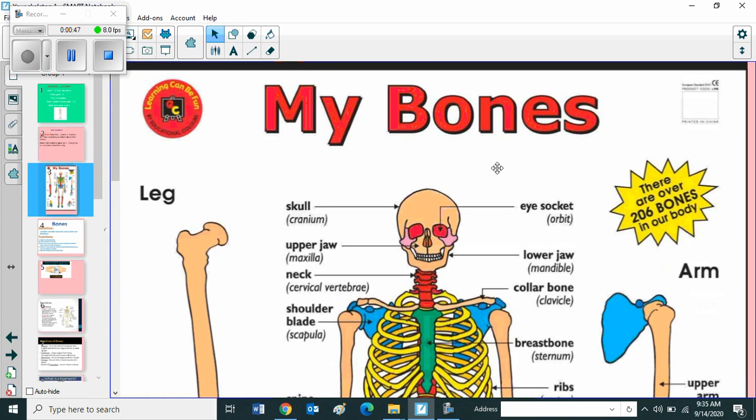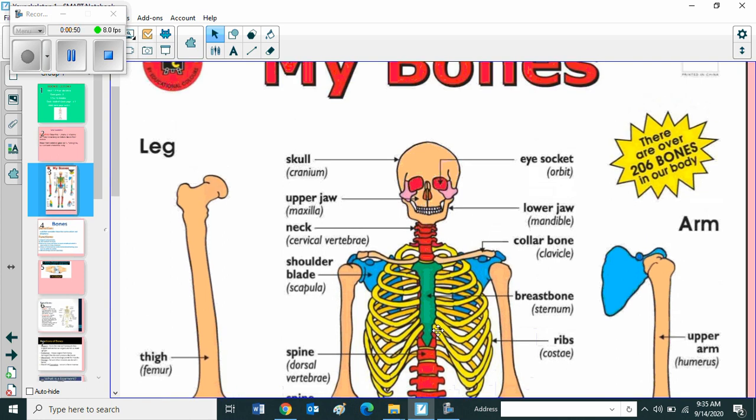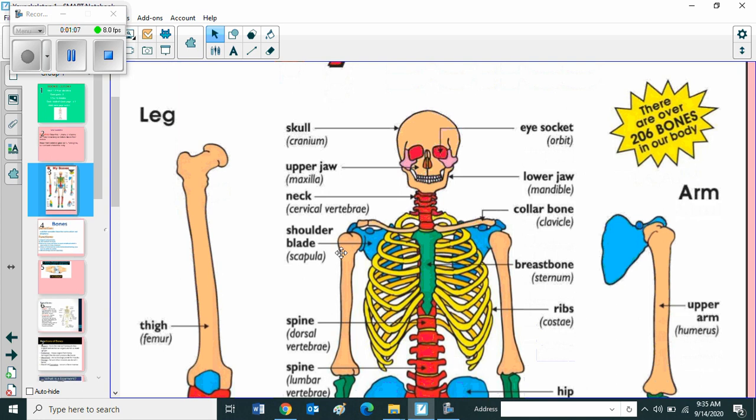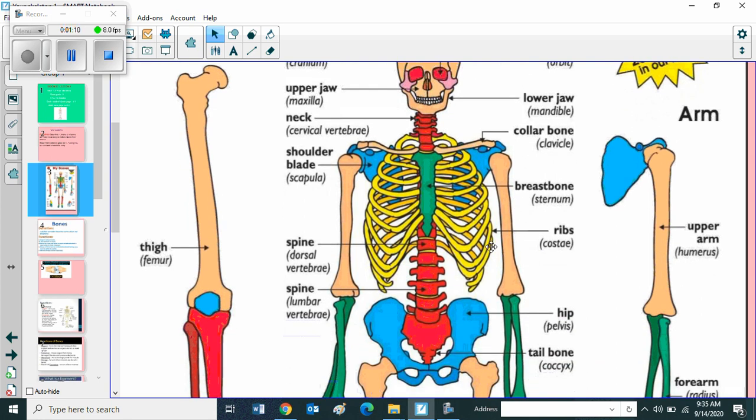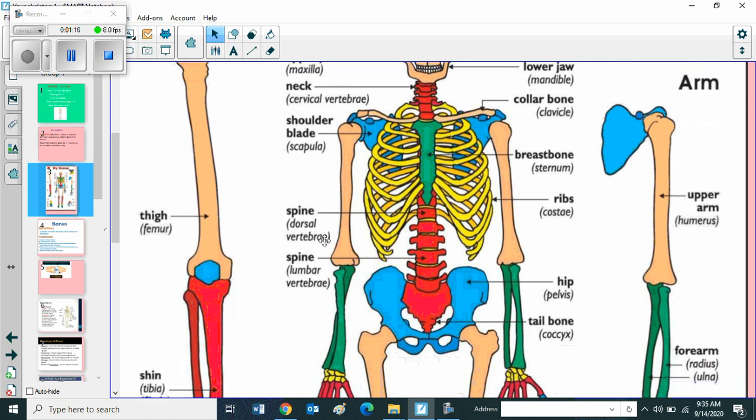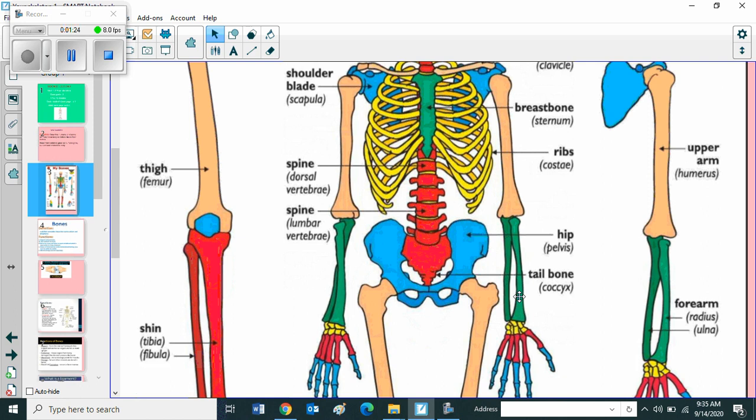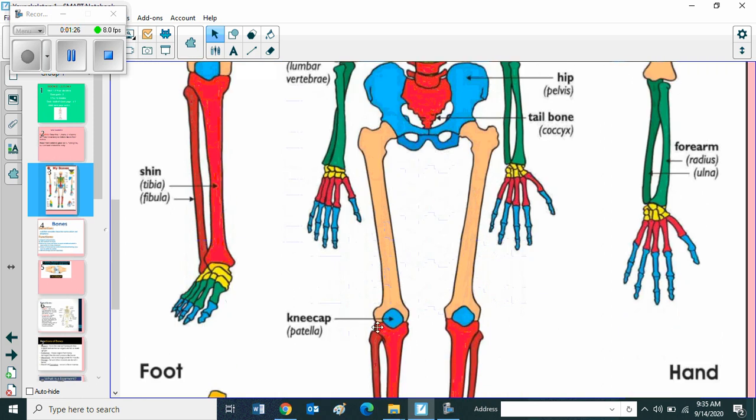My bones. Children, here you can see the bones. Skull. Skull protects the brain. Cranium. Then eye socket. Then upper jaw, lower jaw, neck, collar bone, shoulder blade, breast bone, ribs, spine. This is dorsal vertebrae. This is lumbar vertebrae. Hip. It is also known as pelvis. Then tailbone. Knee cap.